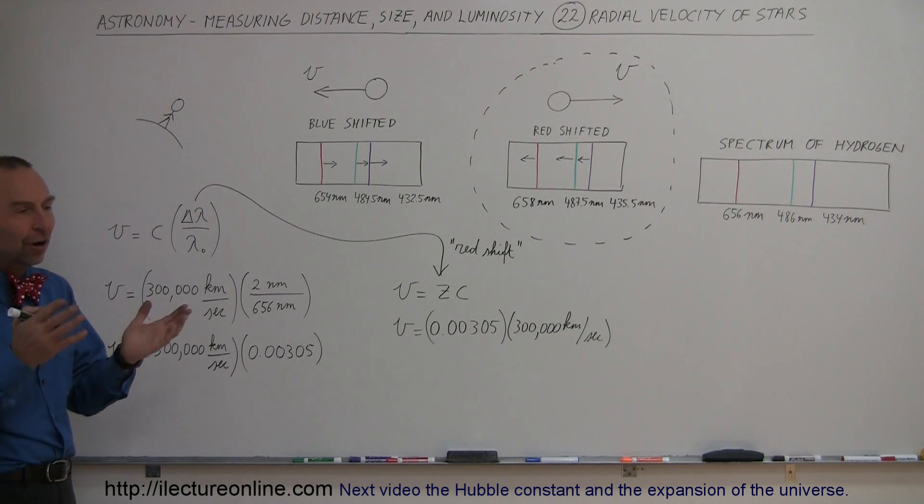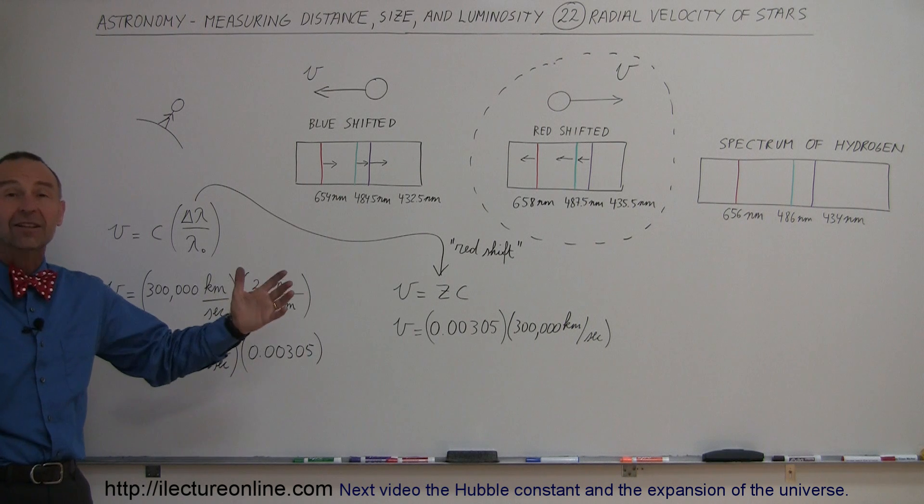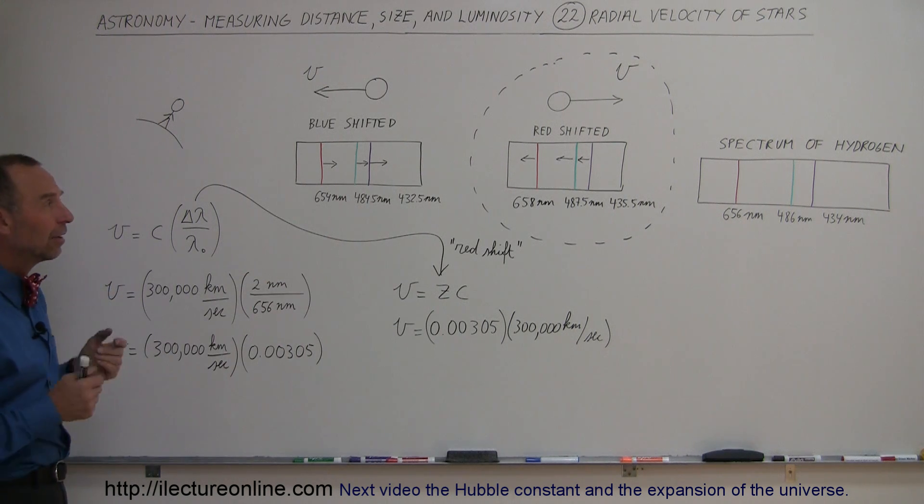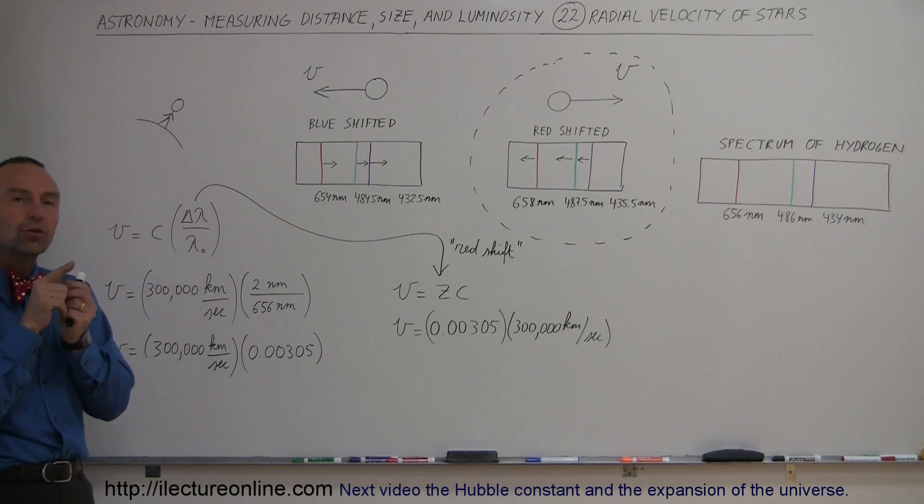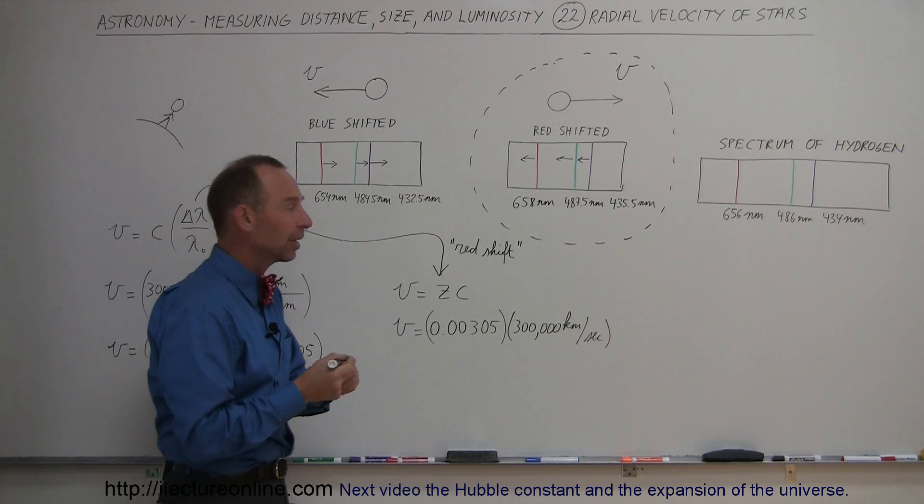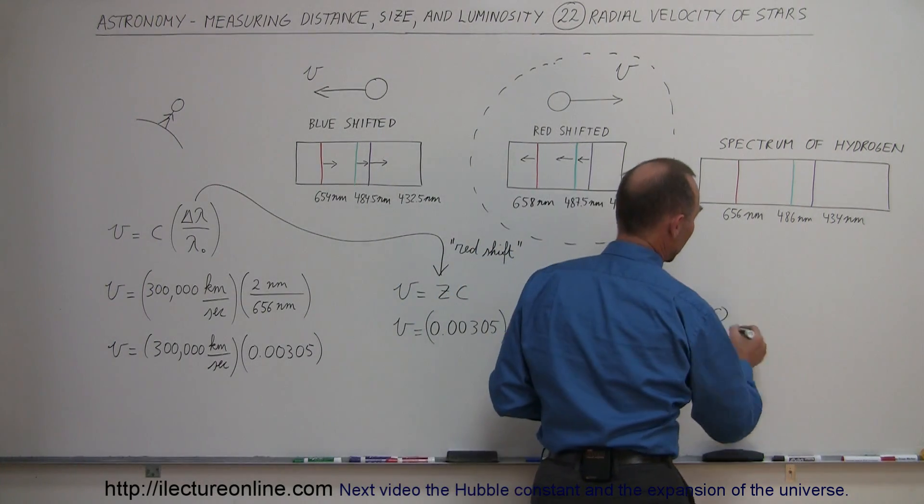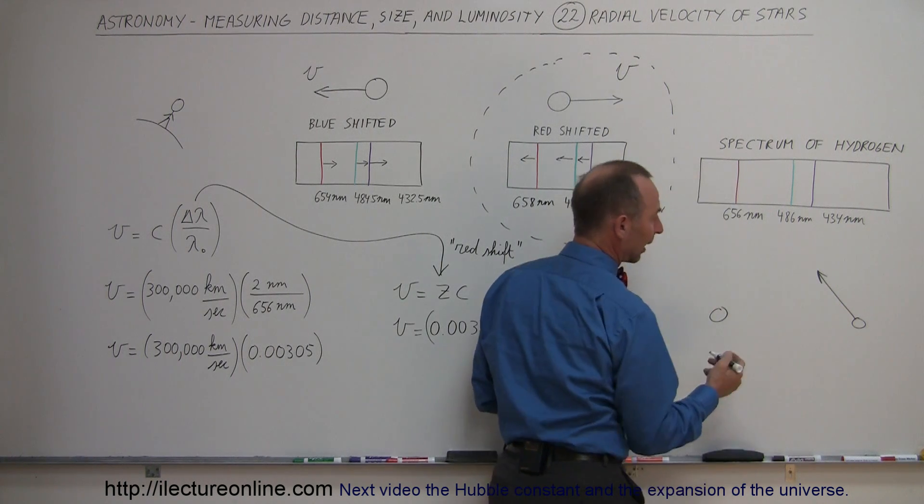Well, stars are moving in all different directions, nebulas are moving in all different directions, galaxies are moving in all different directions and so there always will be a component of that velocity that's either directed towards us or directed away from us and that's called the radial velocity. For example, let's say that the Earth is over here and there's a star and let's say the star is moving in this direction right there, like that.